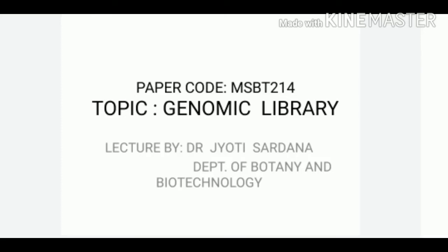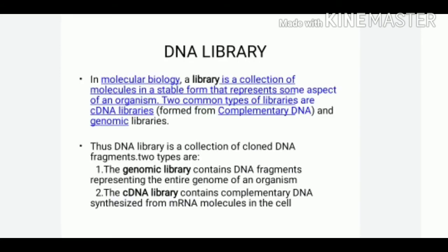Good morning students. The topic that we will discuss today is genomic library. In molecular biology, a library is considered to be a collection of molecules in their stable form which represents some aspect of an organism. There are two common types of libraries: the first are called genomic library and the second are called cDNA library.